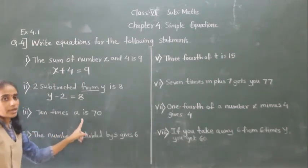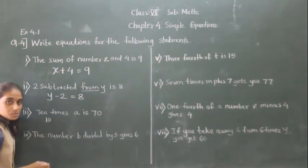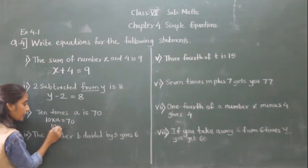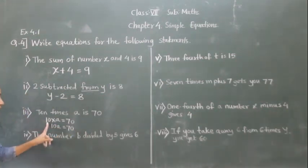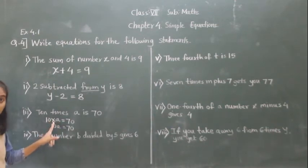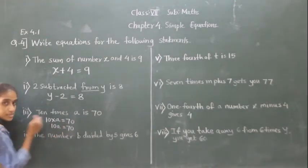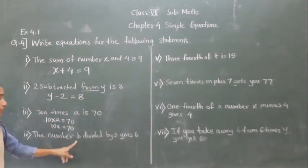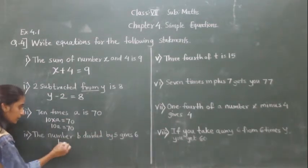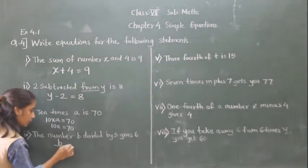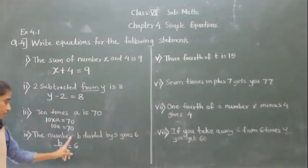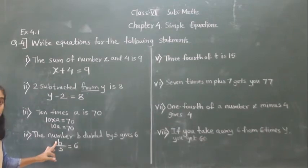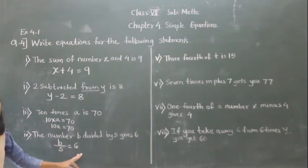Next: 10 times k is 70. 'Times' means multiplication, so 10 into k is equal to 70, written as 10k equals 70. Next: the number p divided by 5 gives 6. When we divide p by 5, the answer is 6, so p divided by 5 is equal to 6.